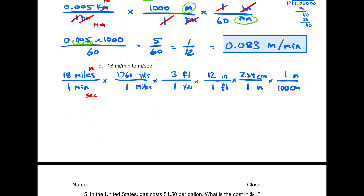I wrote it all out here. Miles cancel miles, yards cancel yards, feet cancel feet, inches cancel inches, and centimeters cancel centimeters, finally arriving at meters. The units remaining are meters per minute — but we're still not done since we also need to convert minutes to seconds.